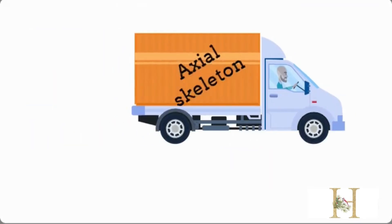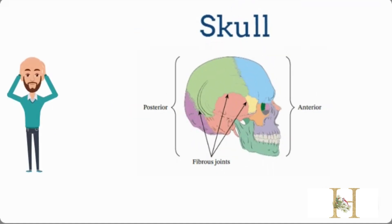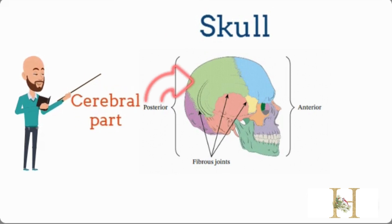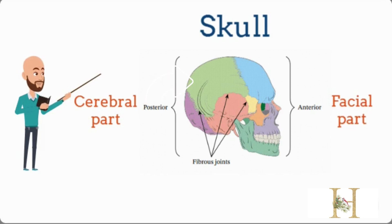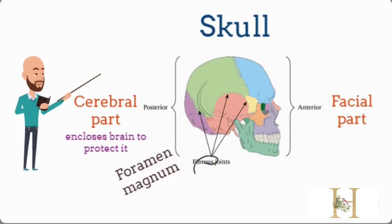In this video we are going to study bones of the axial skeleton. Let's start with the skull. The skull is a bony case that consists of two parts: the posterior or cerebral part, and the anterior facial part. The cerebral part consists of eight bones that form a cavity that encloses the brain to protect it.